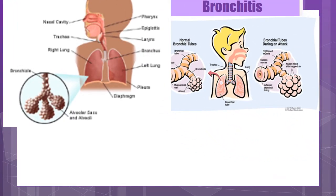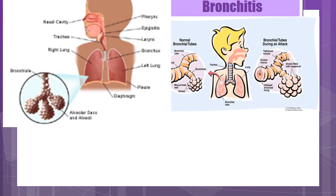First, we're going to talk about bronchitis. The pathophysiology includes inflammation of the large airways. It occurs secondary to a cold or other communicable disease — it's not typically the primary infection. The causative organism is usually a variety of organisms; however, viral agents are the primary cause, such as pneumonia, which is a common cause in children under the age of six.